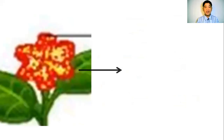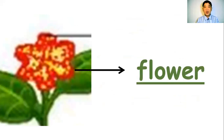Very good. We call it the flower. How do we spell the word flower? It's F-L-O-W-E-R. Everybody say flower.